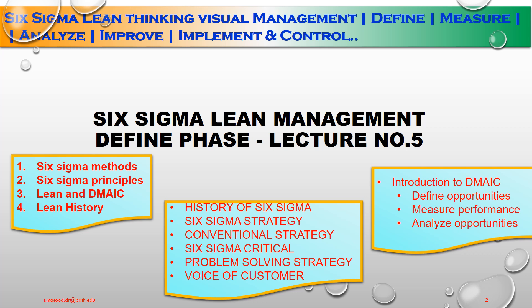In my earlier lectures, we discussed 3 to 4 main elements: Six Sigma Methods, Six Sigma Principles, the difference between Lean and DMAIC — Define, Measure, Analyze, Improve, Control — Lean History, History of Six Sigma, Six Sigma Strategy, Conventional Strategy, Six Sigma Criticals, Problem Solving Strategy, Voice of Customer, and Introduction to DMAIC.